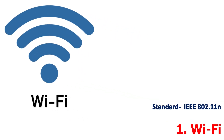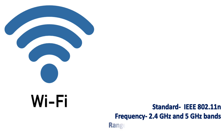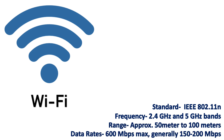Number 1, WiFi. It is the IEEE 802.11n standard based, and its frequency works in two ranges: 2.4GHz and 5GHz bands. Its range is generally 50 meters and can go up to 100 meters with a proper setup. The data rate can be set up to 600 Mbps maximum, and we generally use the data rate in between 150 to 200 Mbps. This data rate also depends upon the channel frequency and the number of antennas used.